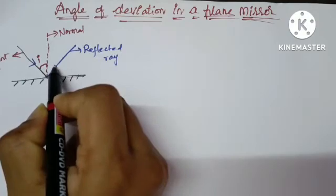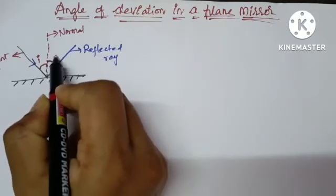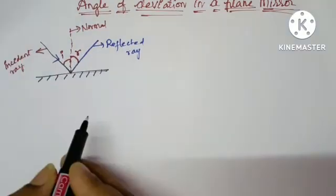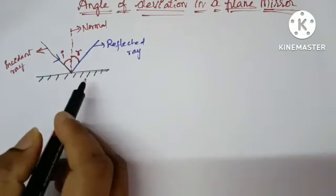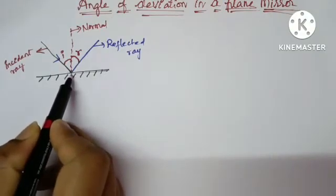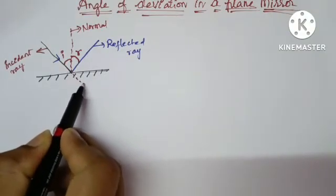The angle between reflected ray and the normal is angle of reflection. If there is no plane mirror, the direction of the incident ray should be like this.